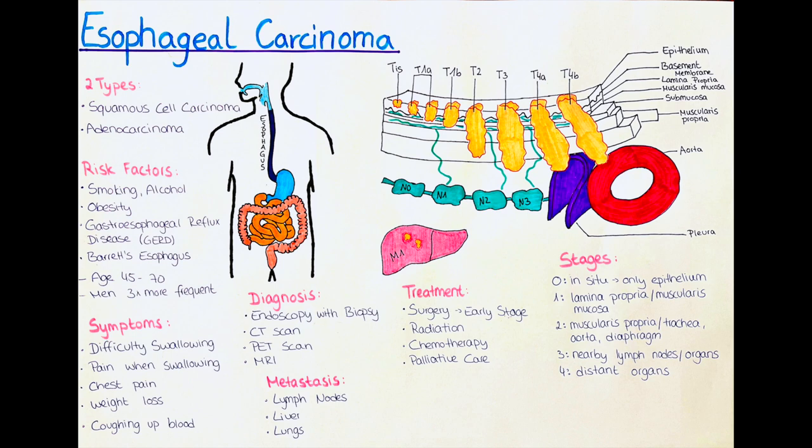The risk of metastases depends on several factors including the stage of the cancer, the location of the tumor, and the patient's overall health. Early detection and treatment of esophageal cancer can help to prevent or delay the spread of the cancer to other parts of the body. The choice of treatment depends on the location and extent of the metastases, as well as the patient's overall health and preferences.